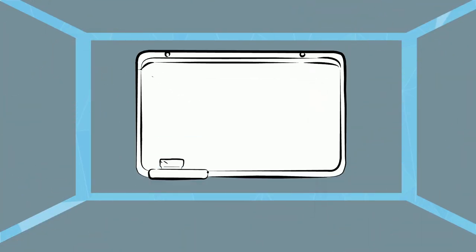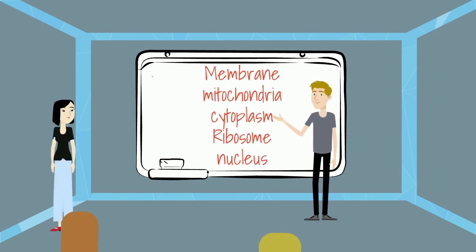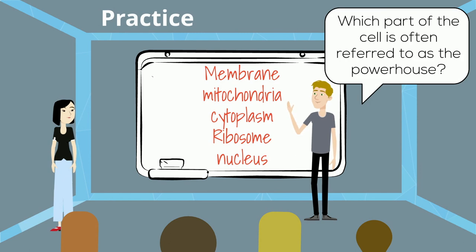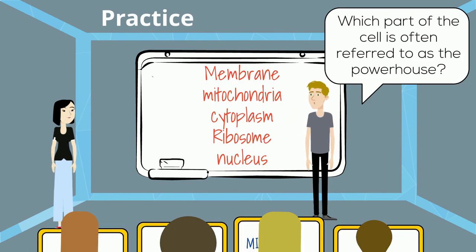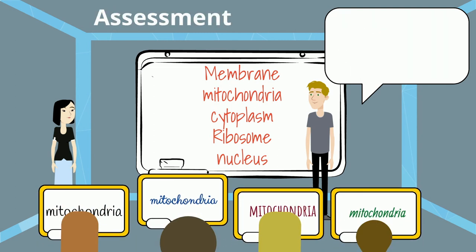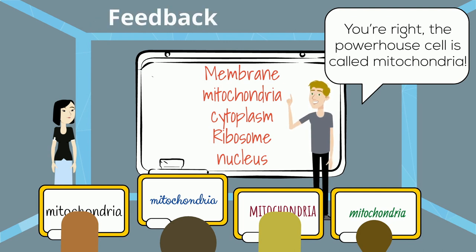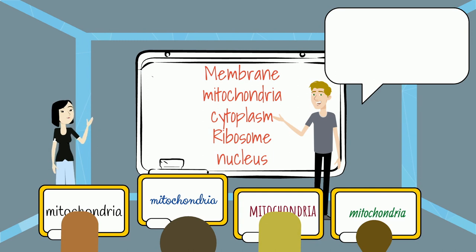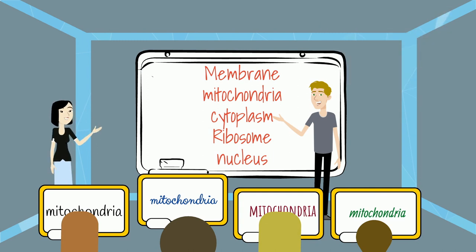Let's put everything together. In Mr. Wallace's class, ASR looked like this. Mr. Wallace wrote five vocabulary words on the board. He asked the class which part of the cell is often referred to as the powerhouse. The students wrote their answers on response cards. Mr. Wallace gave a signal and all students held up their response cards at the same time. He then quickly scanned the students' answers and determined what to do next. Most of his students were correct, so he gave them praise. During that activity, Ms. Chow observed that he asked five questions and each student had the opportunity to respond five times.